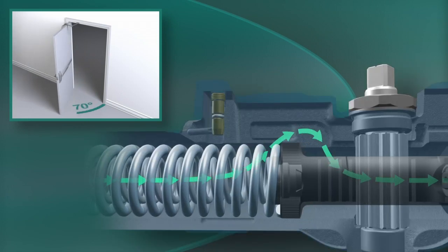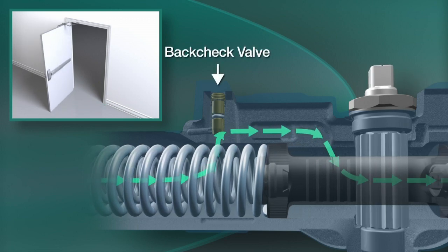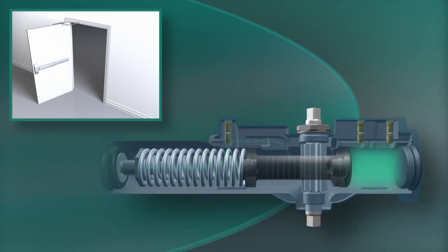When the door reaches about 70 degrees open, oil begins flowing through the back check valve, gradually increasing the amount of pressure required to open the door farther. This cushioning effect is called the back check function.